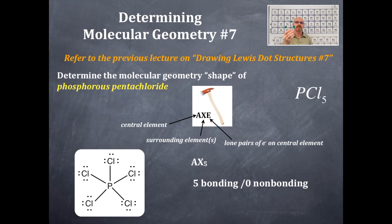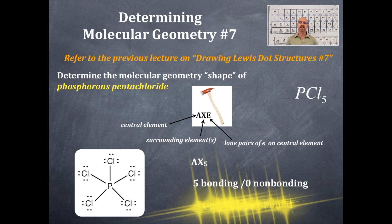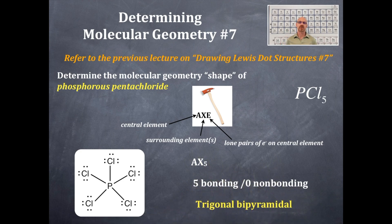That should give you an idea of what this shape is. Based on AX5, you should memorize the name of the shape that's associated with AX5, or you should memorize the shape that's with 5 bonding and 0 non-bonding domains. And that, of course, is trigonal bipyramidal.